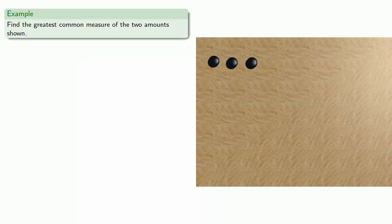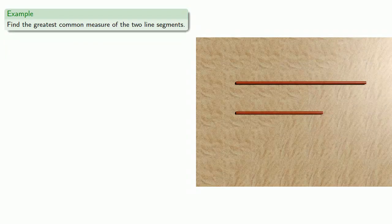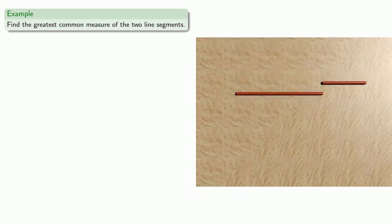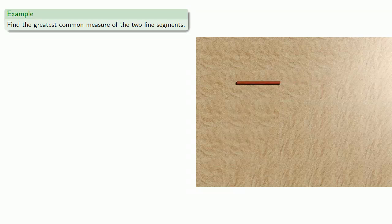Since this is the greatest common measure, both of our original quantities can be expressed in terms of this measure. For example, let's say we have two line segments and we want to find the greatest common measure. We'll take the smaller line segment and subtract the smaller from the larger. And now we have a smaller line segment — we'll subtract the smaller from the larger, and again we'll subtract the smaller from the larger. And since nothing is left, the last thing we subtracted, which is the remaining line segment, is going to be our greatest common measure.